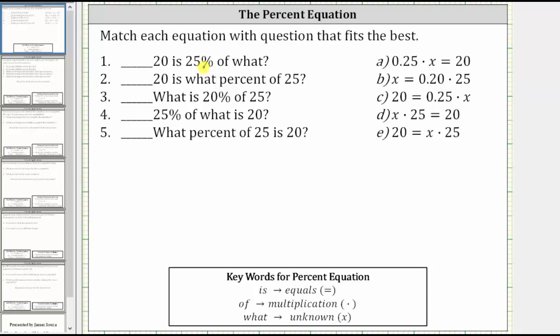In this problem, we are asked to match each equation on the right with the question that best fits on the left. The key words when writing a percent equation are 'is', 'of', and 'what'. Is means equals, of means multiplication, and what (or what number or what percent) represents the unknown, and therefore we use a variable.